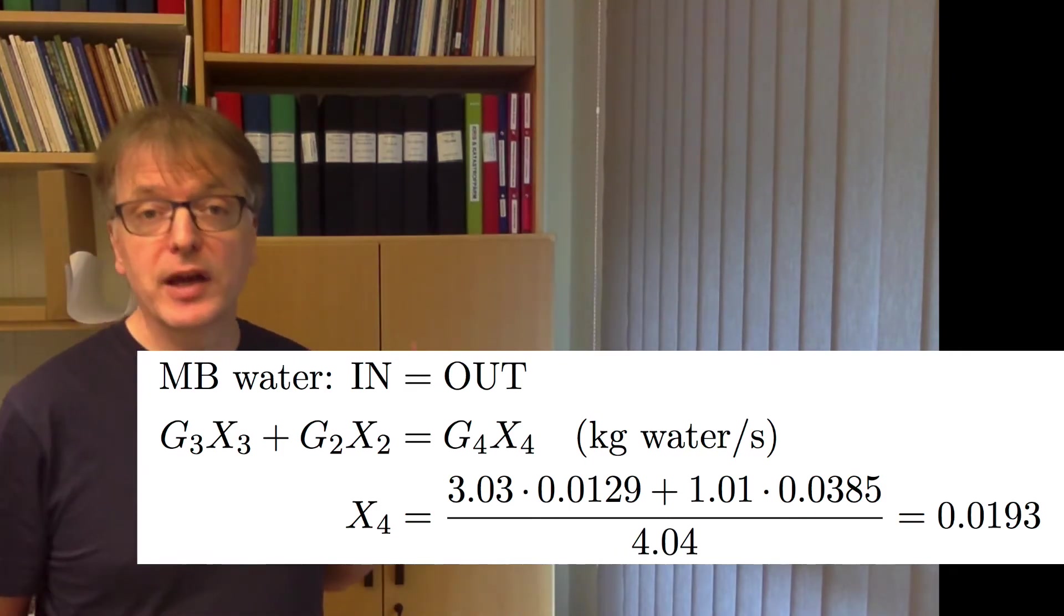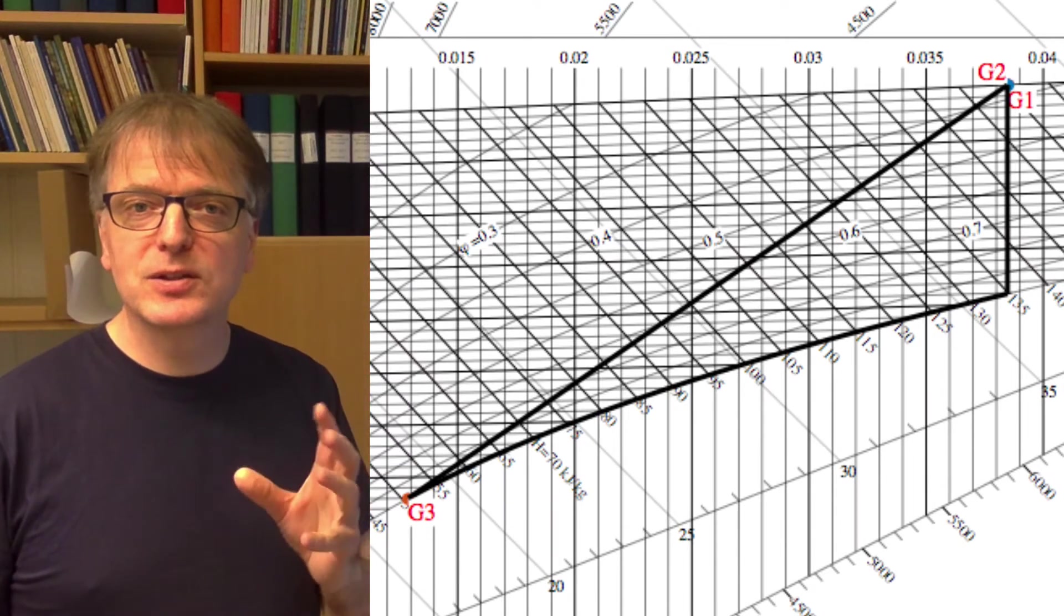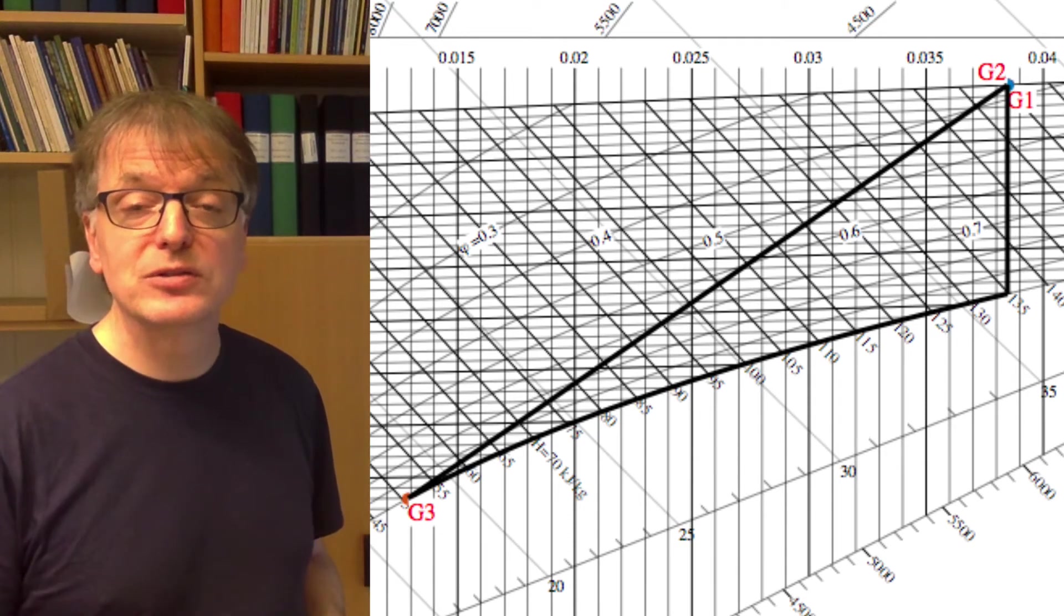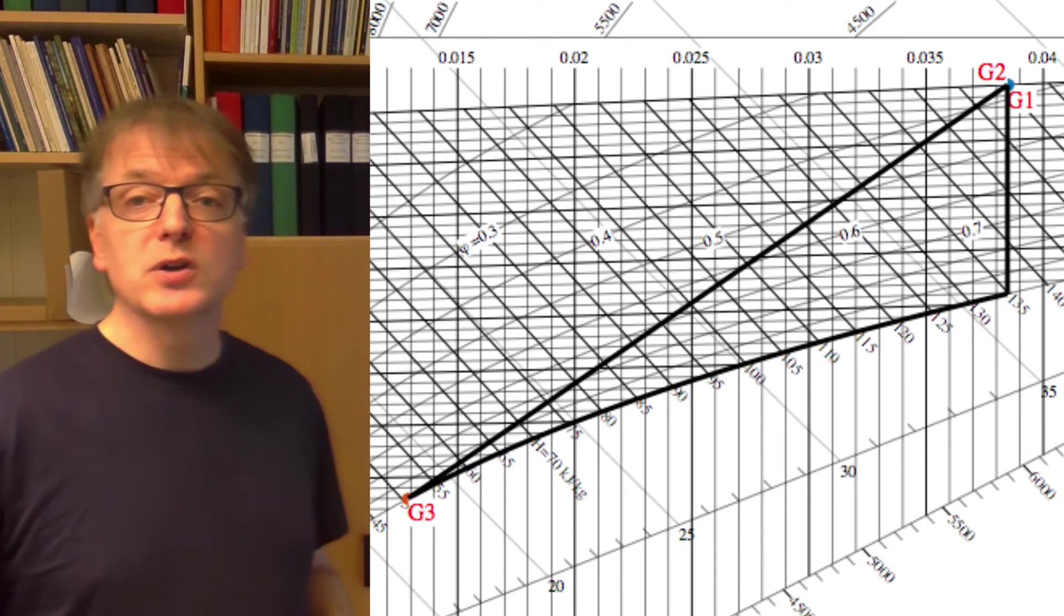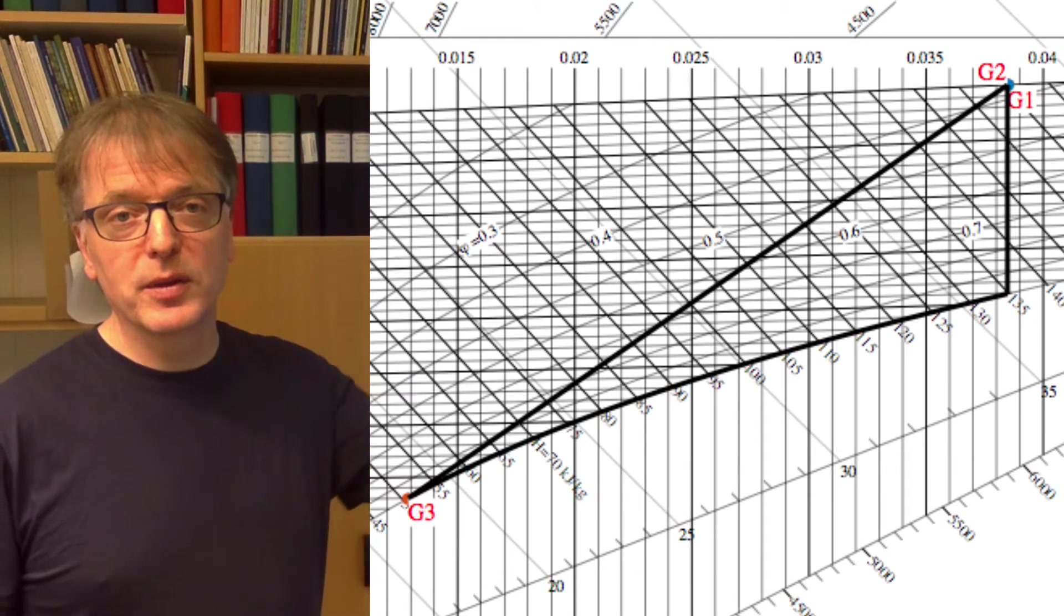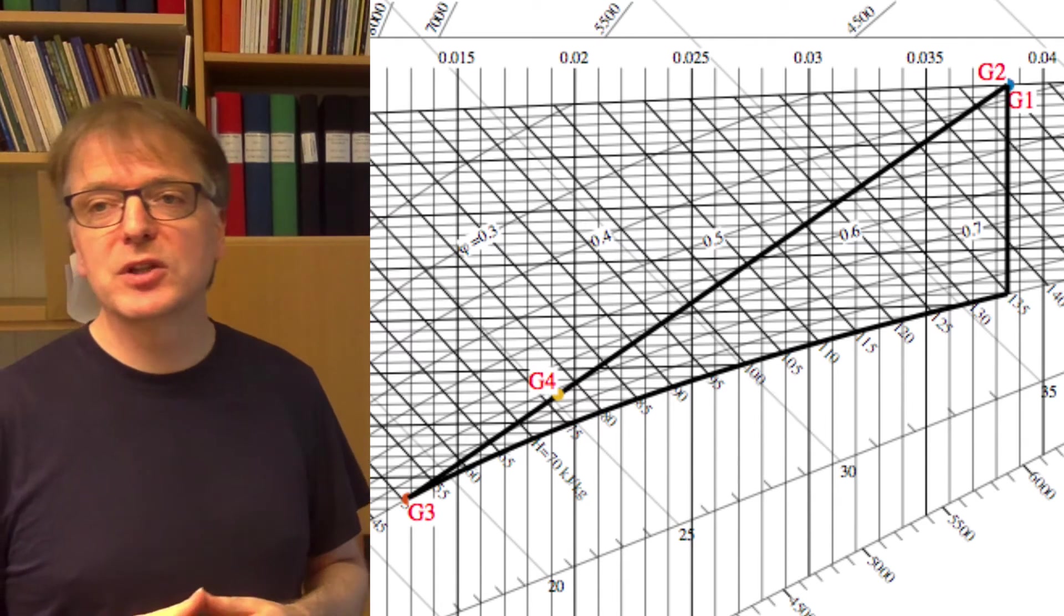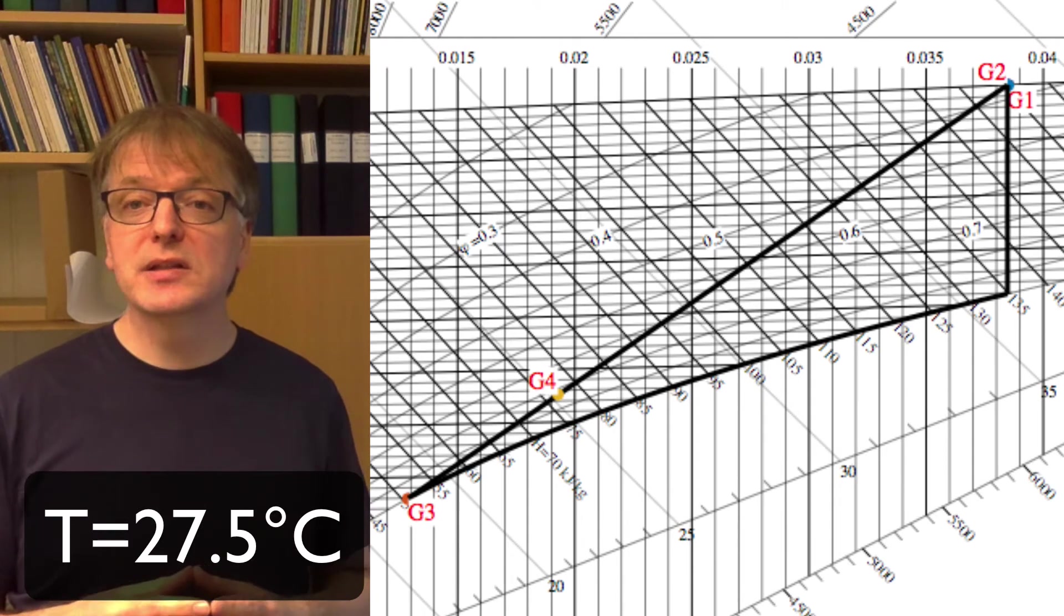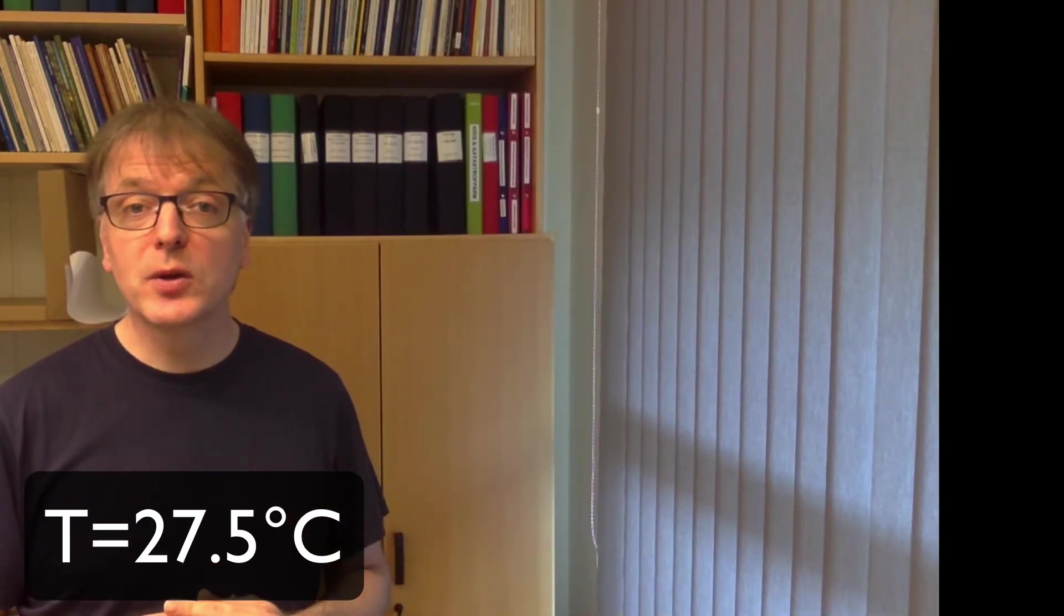And we mark that point on the mixing line, because remember, if you mix two flows adiabatically in the Mollier diagram, the result will be on a straight line between the two. So we mark the point on the mixing line where we have an x value of 0.0193, and then we can read the temperature, and we get the temperature as 27.5 degrees. And that's the answer to the question.